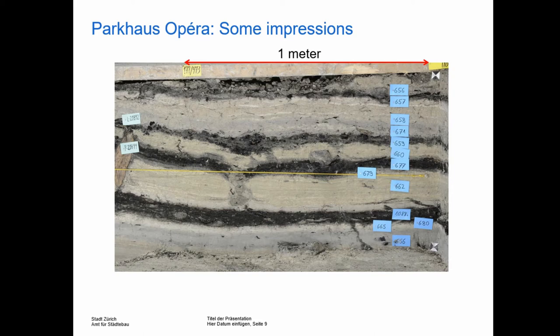Here is an impression of the deposits in Zurich Opera. The bright sediment consists of natural calcareous lake marl, whereas the dark layers represent the anthropogenic waterlogged organic cultural deposits.